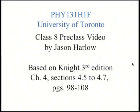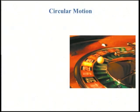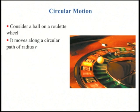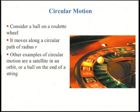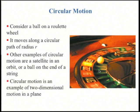We continue on with chapter 4. Let's start talking about circular motion. Here's a ball on a roulette wheel going round and round. It moves in a circular path of radius r. Other objects with circular motion might be a satellite orbiting the Earth, or a ball twirling around the end of a string. This is all examples of two-dimensional motion because we can set up a plane with x and y coordinates.